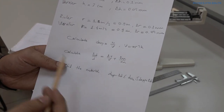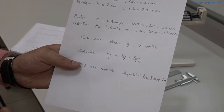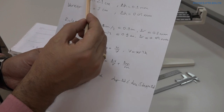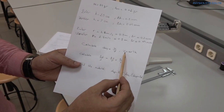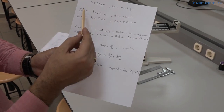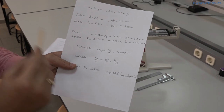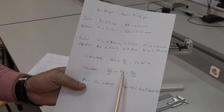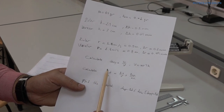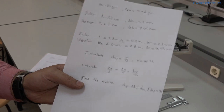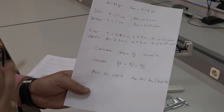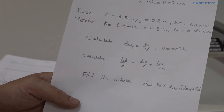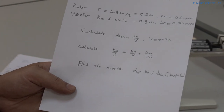First of all, you have to calculate the experimental density, which equals M over V. M is given, and you can find V using both the ruler and Vernier values. Then you need to calculate delta D over D equals delta V over V plus delta M over M, and find delta D. To identify the material of the cylinder, you have to satisfy the density range equation using the theoretical values given in the physical lab sheets. Good luck.